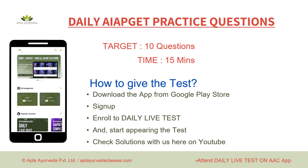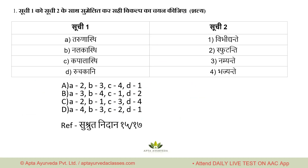Now let us begin with today's set of 10 questions. The first question is a Suchi matching (list-matching) question from Bhagna Adhyaya (fracture chapter). Suchi Ek (List 1) has: Tarunasthi, Nalakasthi, Kapalasthi, and Ruchakasthi. Suchi Do (List 2) has: Vibhidyante, Sphuteyante, Namayante, Bhajayante. We need to match them. This is an important point — we often forget this topic focusing only on Sandhi mukta and Kandha bhagna.